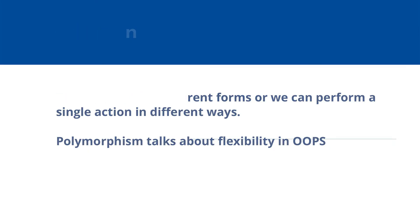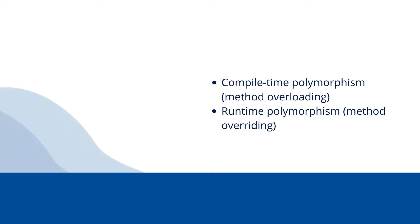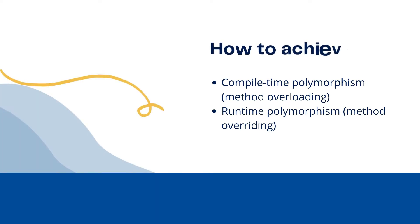Polymorphism can be achieved in two ways. First is compile-time polymorphism, which is called method overloading. Second is runtime polymorphism, which is also called method overriding. You don't need to explain both in detail in an interview — just tell the interviewer these are the two types, and let the interviewer ask you specifically about method overloading and method overriding.